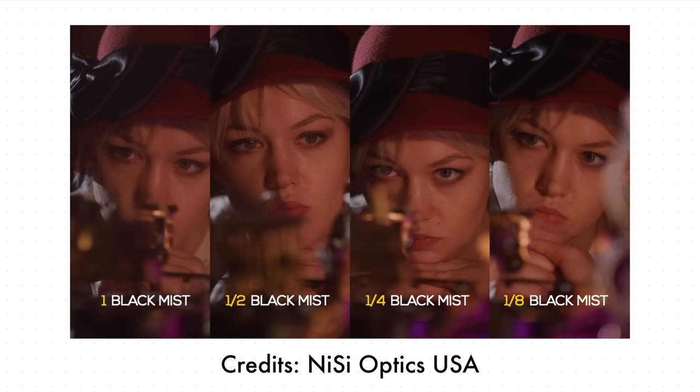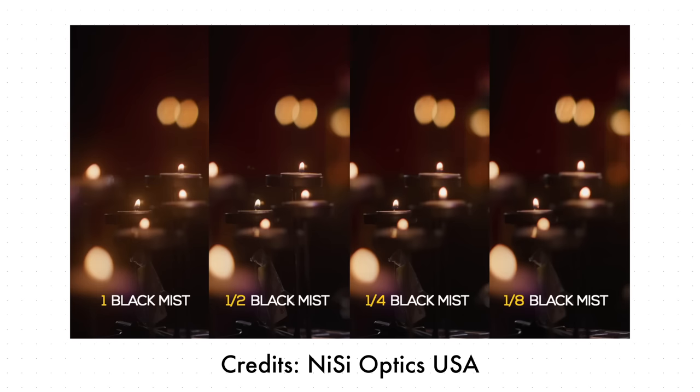The black mist filter comes in different strengths — for example 1/2, 1/4, and 1/8. The bigger the number, the stronger the effect, since it's inverse. So 1/2 will have a stronger effect than 1/4, and 1/4 will have a stronger effect than 1/8. According to me, 1/4 is the sweet spot for the black mist filter. The effect is not too strong — subtle, but at the same time makes a good enough difference.